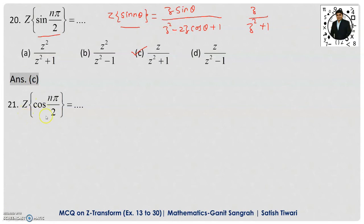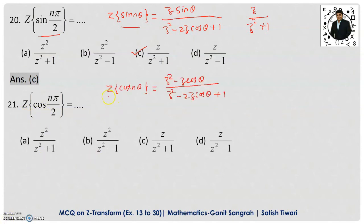Example 21: Z-transform of cos(nπ/2). Using the formula for Z-transform of cos(nθ), substitute θ = π/2. cos(π/2) = 0, so the numerator becomes z² − 0 = z², and denominator becomes z² + 1. Therefore Z-transform of cos(nπ/2) = z²/(z² + 1), and option A is correct. Note: the inverse Z-transform of z/(z²+1) is sin(nπ/2) and of z²/(z²+1) is cos(nπ/2).